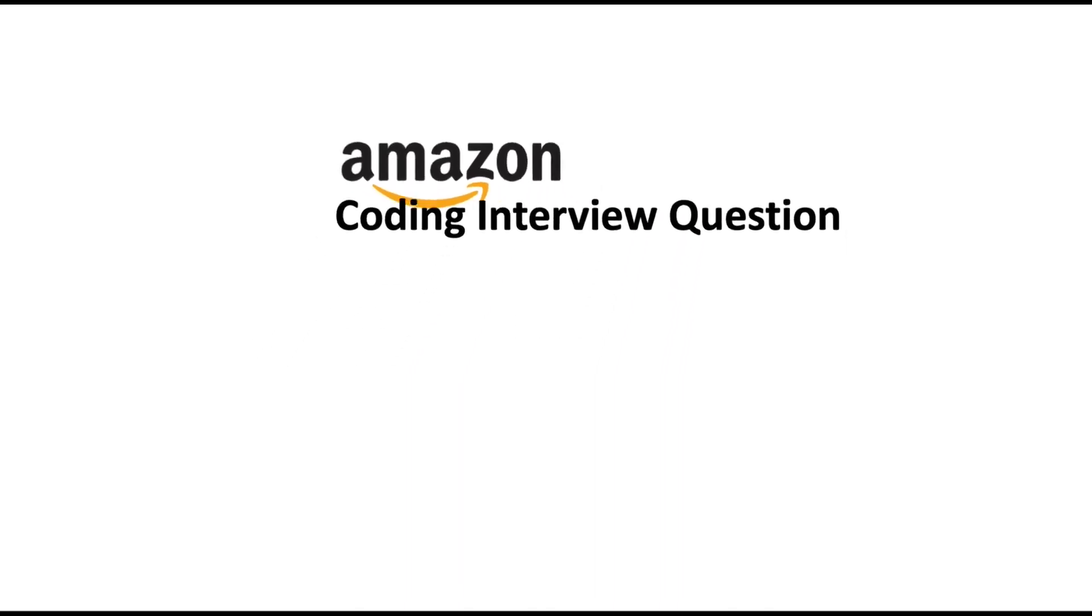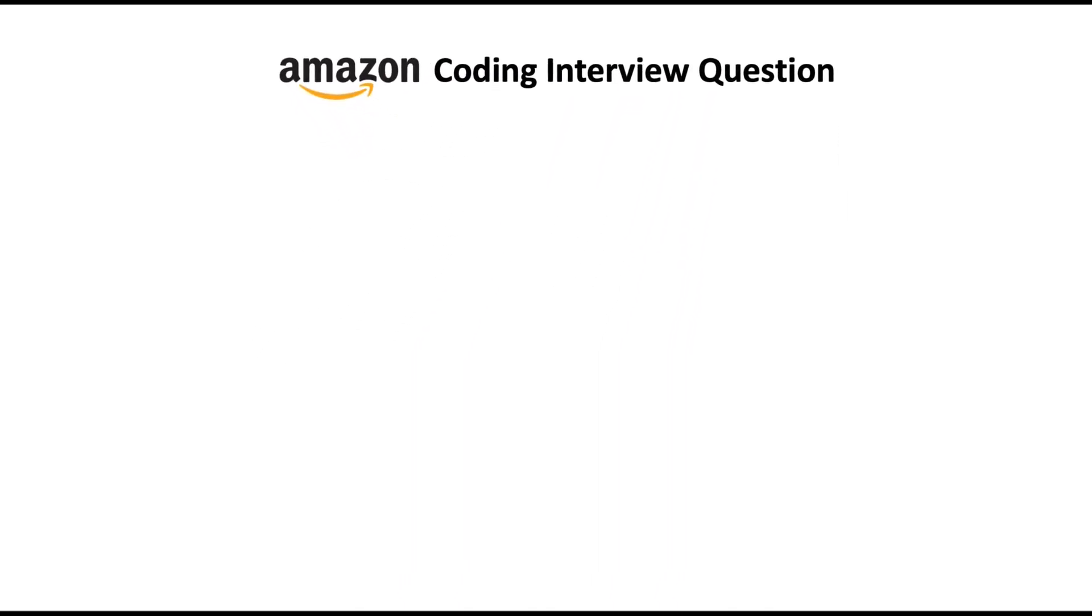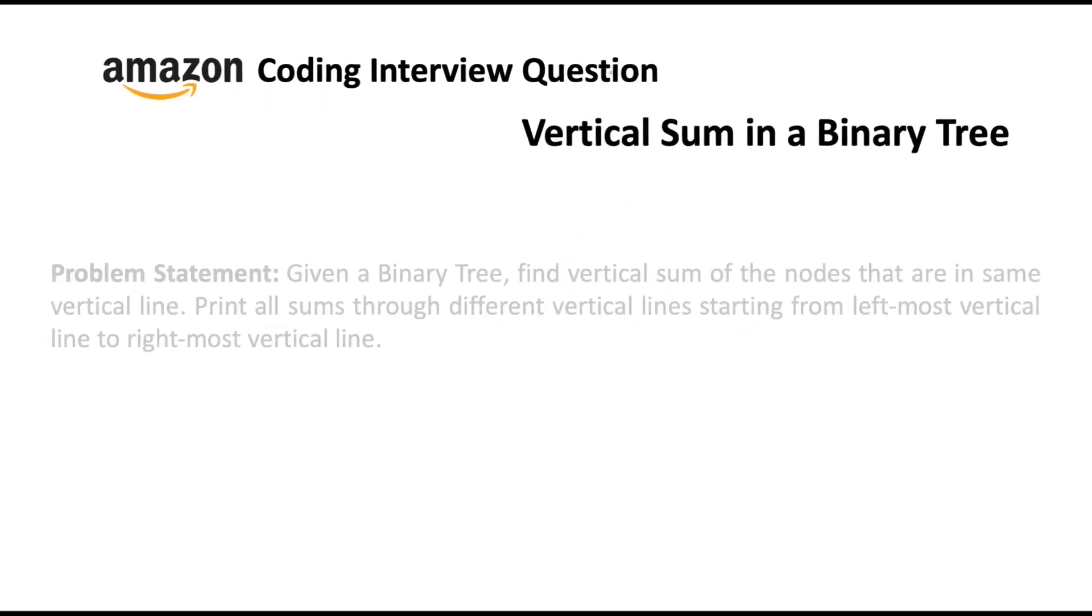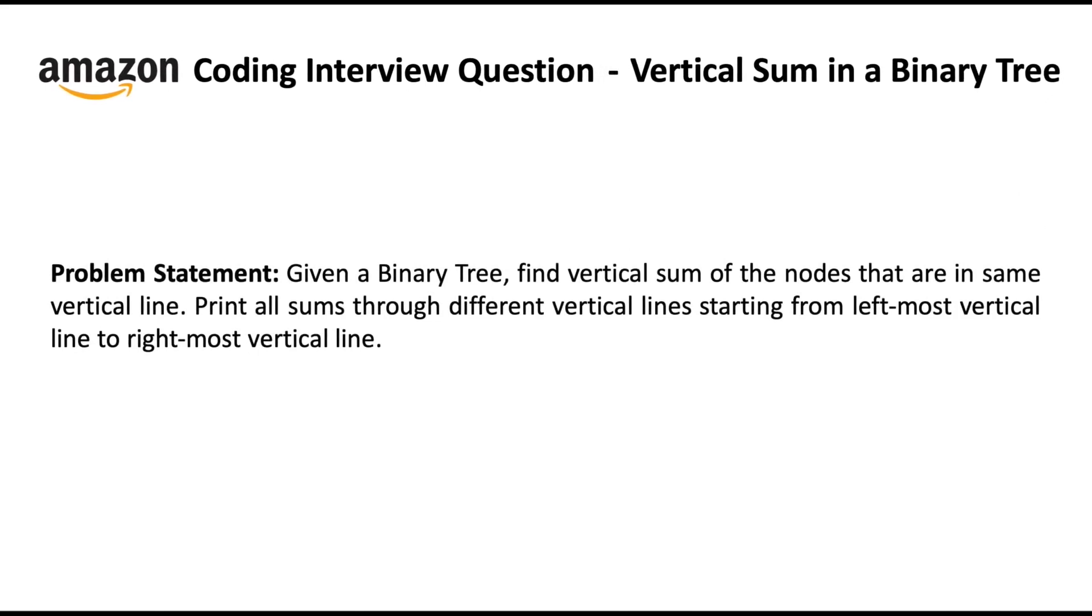So, the problem which we will talk about in this video is the vertical sum in a binary tree. The problem statement is this way. Given a binary tree, find the vertical sum of the nodes that are in the same vertical line. Print all sums through different vertical lines starting from the leftmost vertical line to the rightmost vertical line.